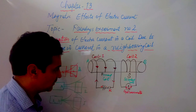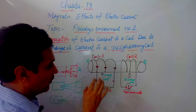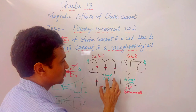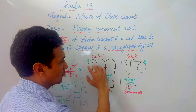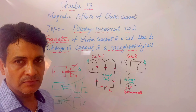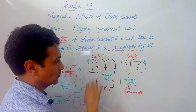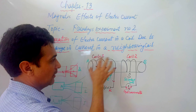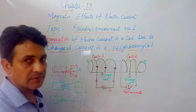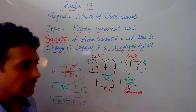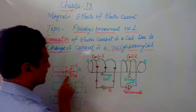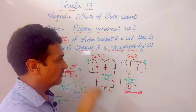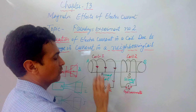Now when we press the key K, current will start growing in this circuit. Because there are a large number of coils, the current starts growing, and due to this current it becomes a magnet. When it becomes a magnet, magnetic field lines will pass to the neighboring coil.